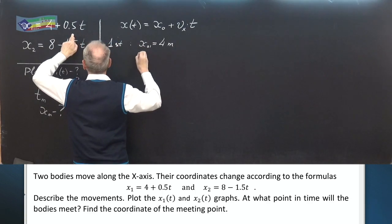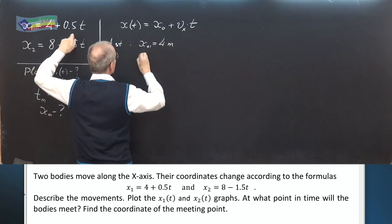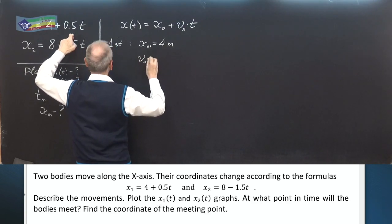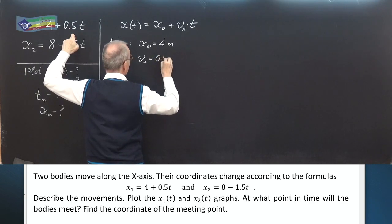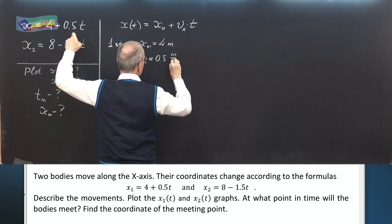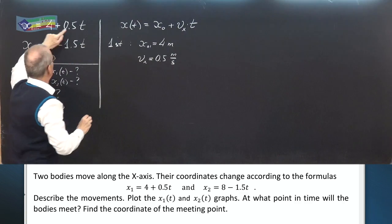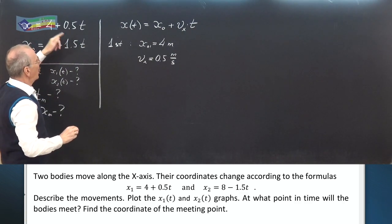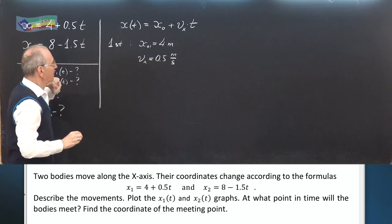The initial position of the first body is 4 meters. The velocity vₓ equals 0.5 meters per second. And pay attention, plus means that body moves along the x axis.